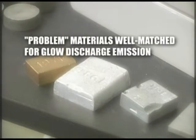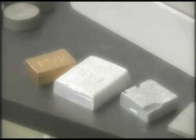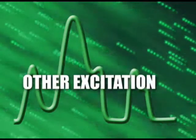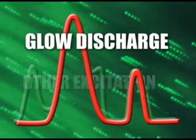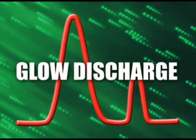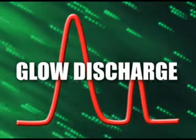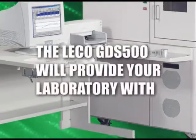In addition to typical ferrous applications, many problem materials are best measured by the GDS500 compared to other methods. Stainless steel and other high alloy materials create intense nickel and chrome interferences. The glow discharge source reduces these interferences and allows the proper analysis to be performed.